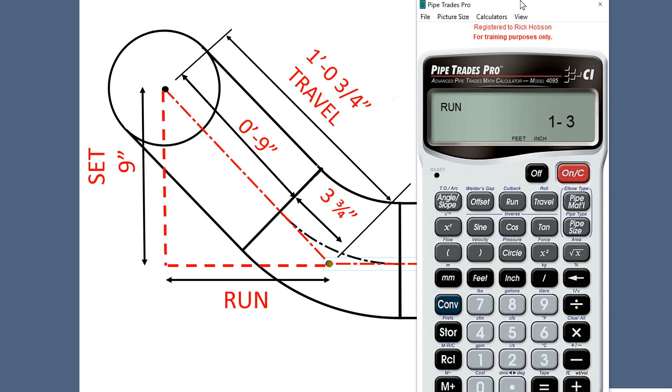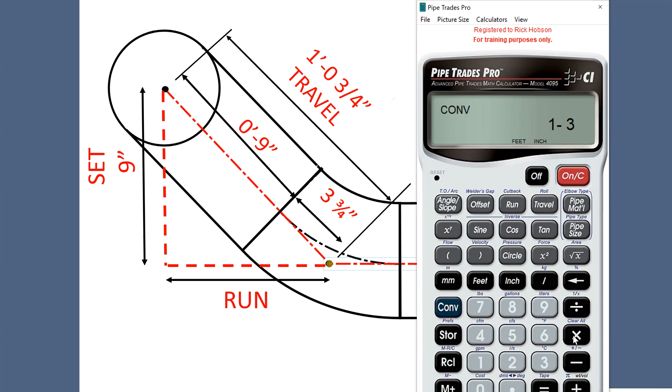So, let's take our pipe trades pro. Let's put it in one foot, zero inch, three quarter. Put it in as a travel. 45 angle slope. Press the offset. There you go. Nine inches is the set. Nine inches is the 90. Basically, no math. Press the run. Both sides are the same.